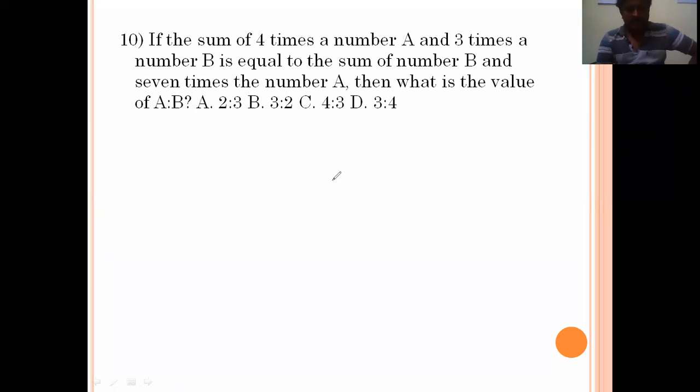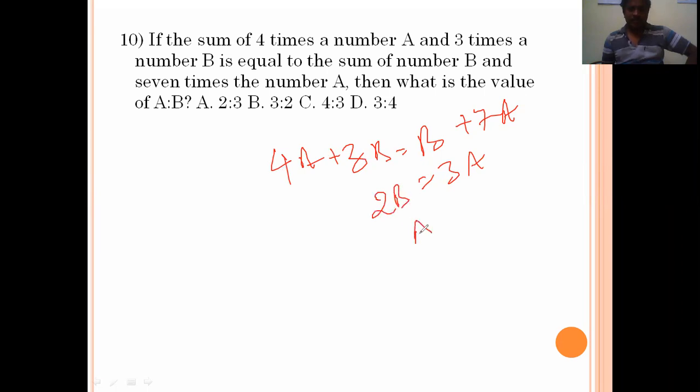The sum of four times a number A and three times a number B is equal to the sum of number B and seven times number A. Then what is the value of A is to B? Four times A plus three times B equals B plus seven times A. 7A minus 4A is 3A. 3B minus B is 2B. A by B is 2 by 3, which means 2 is to 3. Option A is the right answer.